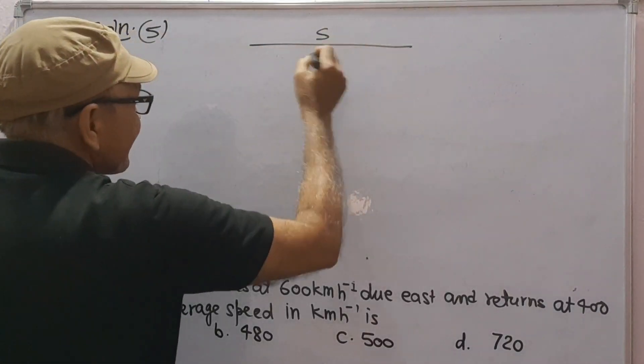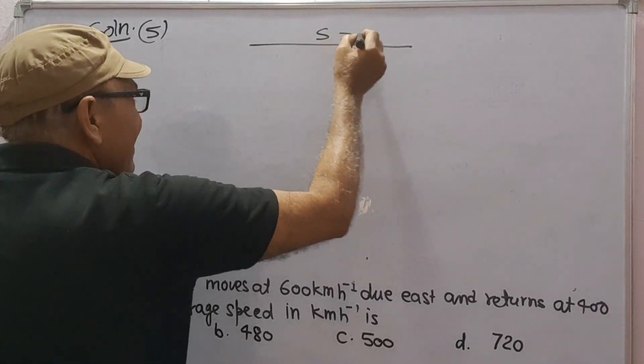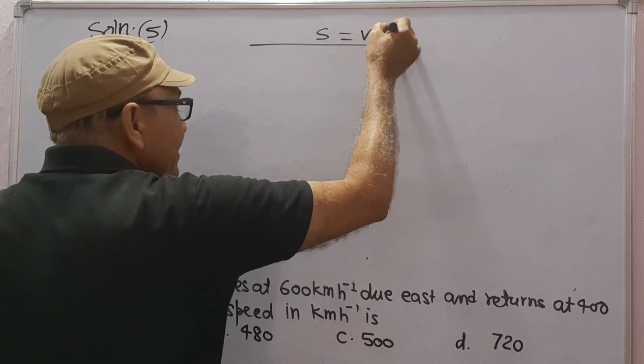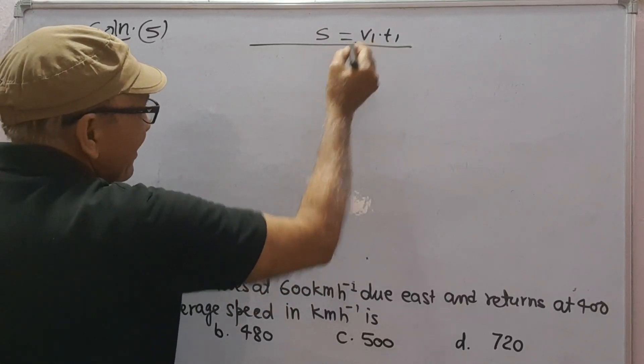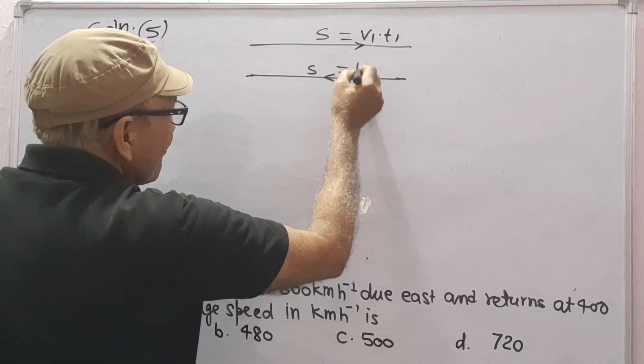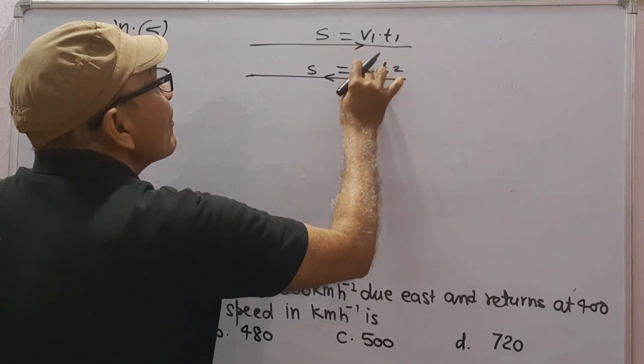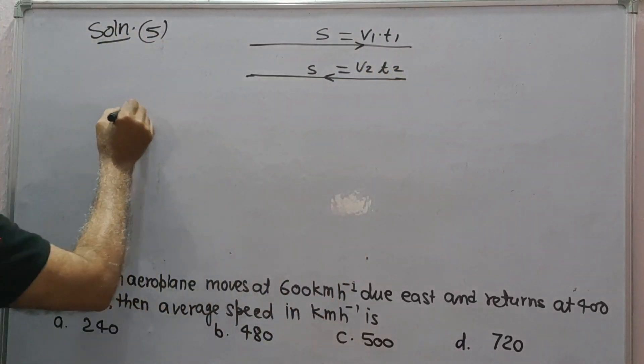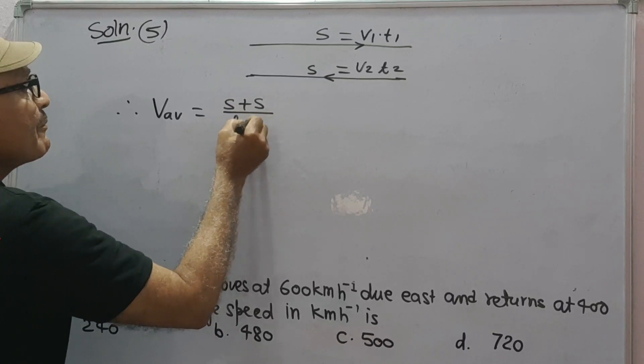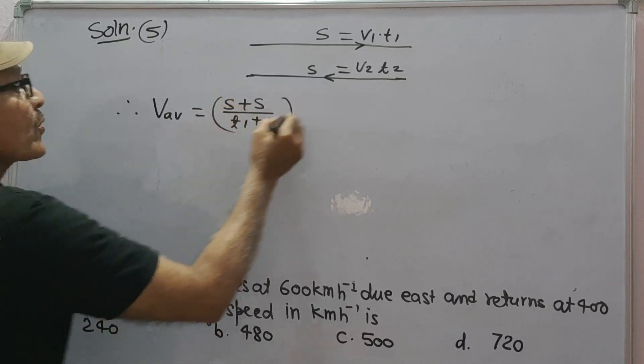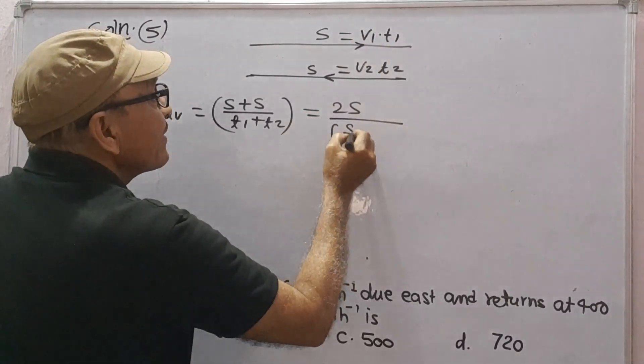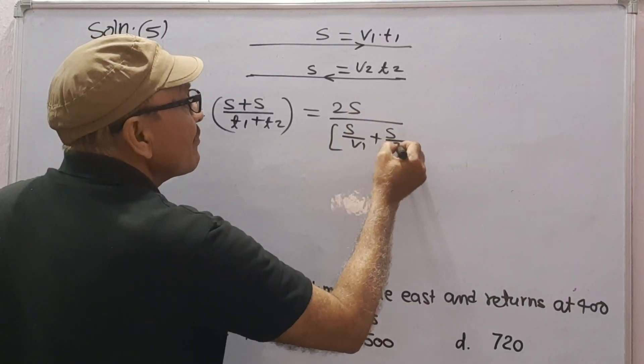Suppose this is distance S, velocity is V1 and time is T1, therefore V1 into T1 will be equal to S. V2 into T2. Therefore average velocity will be equal to total distance upon total time. Total distance is 2S and time T1 is equal to S upon V1, T2 is equal to S upon V2.